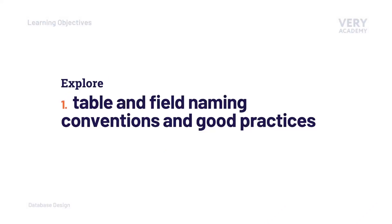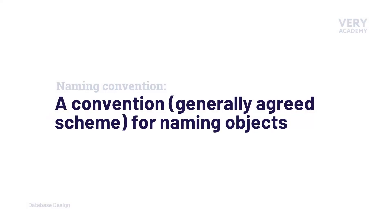In this tutorial, we're going to explore table and field naming, the conventions and what some might consider good practices. A naming convention is a general agreed way of naming objects. If possible, it is a good approach to think about naming at the start of your project, and to generate a general set of guidelines which can then be used by yourself and maybe the team, so that you're all working towards the same goals, same targets and same set of rules.